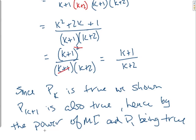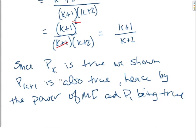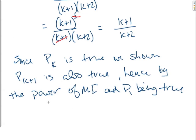being true, pn is true for all positive integers. True for all n belonging to z positive.